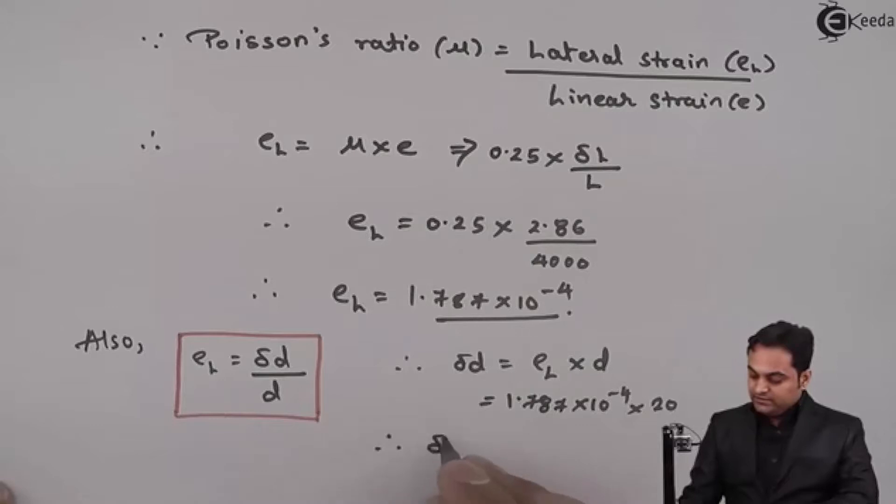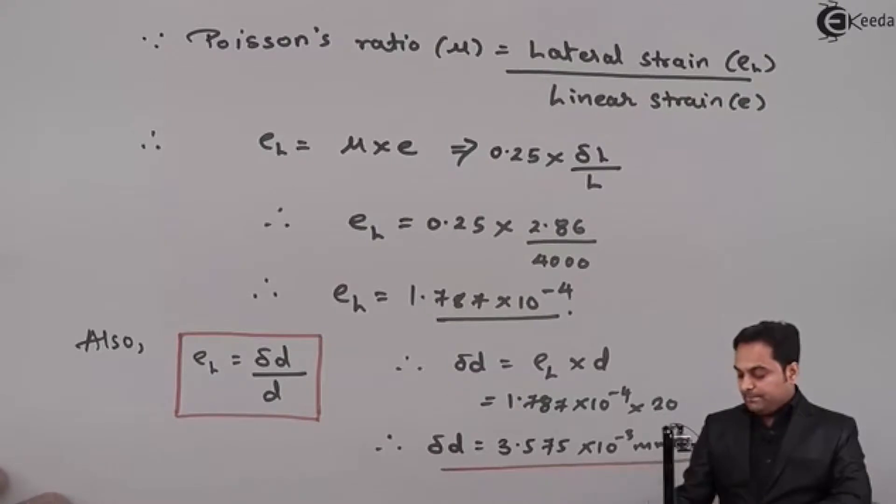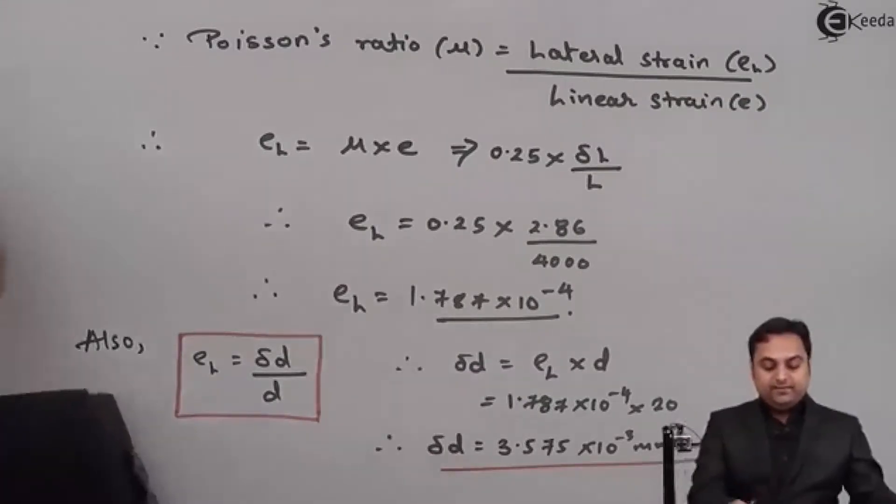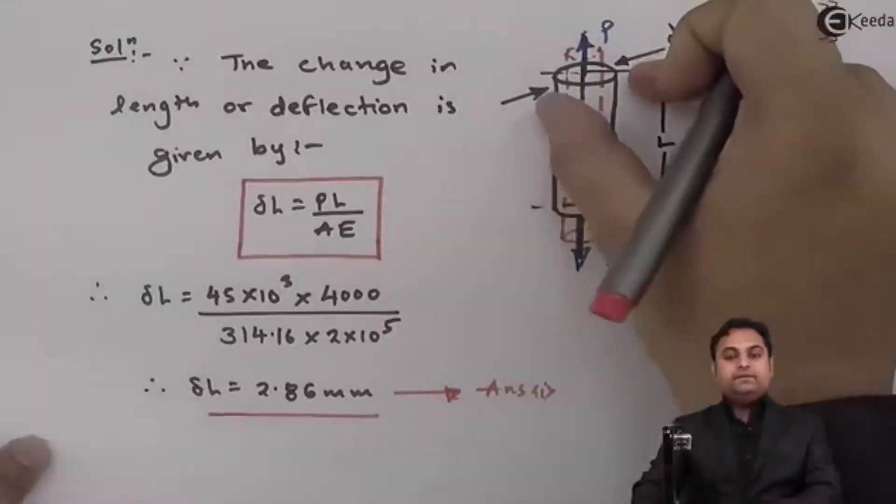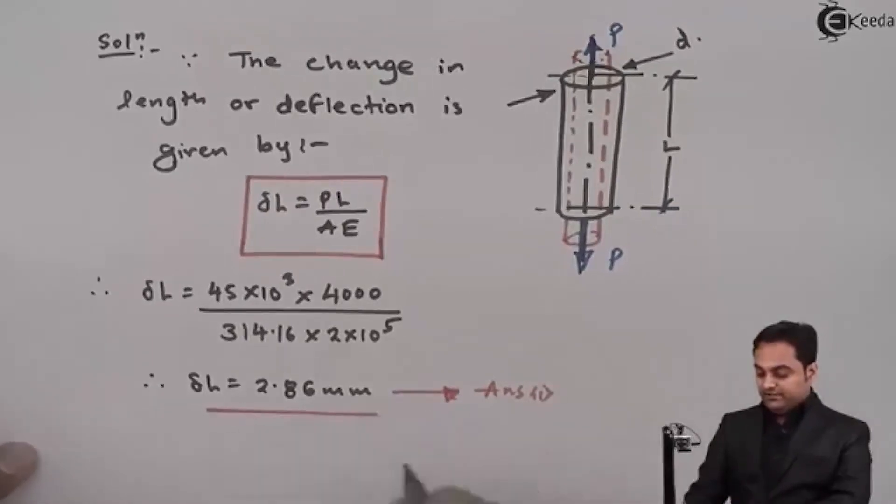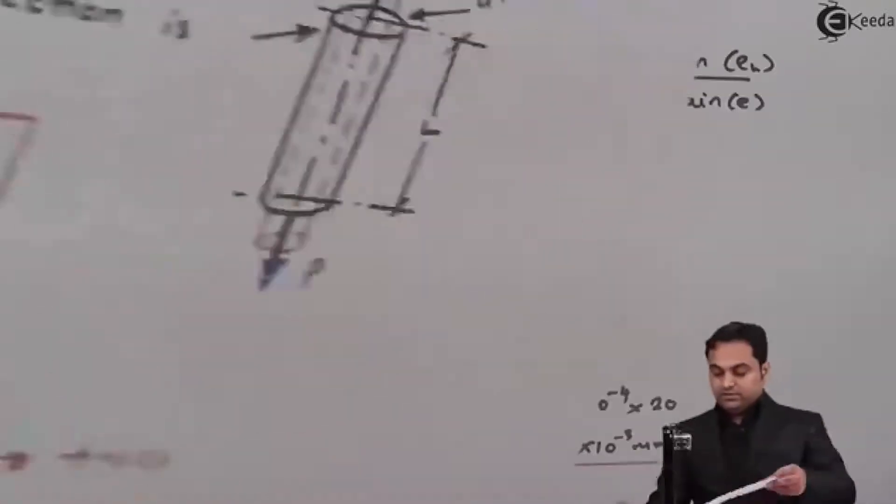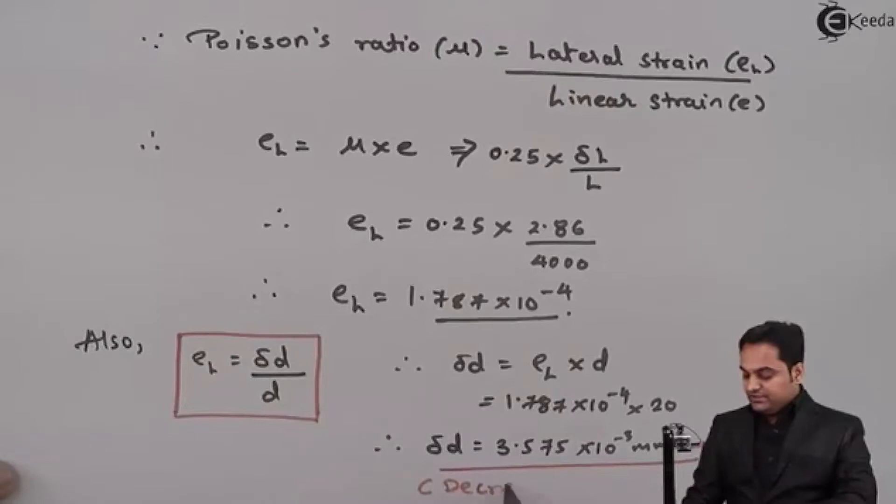Here as we can see from the diagram of the rod, it is clear that length increases, diameter decreases. So when I am getting this deflection of length, there is increase in the length. And here the diameter is reduced, so there is decrease in the diameter.